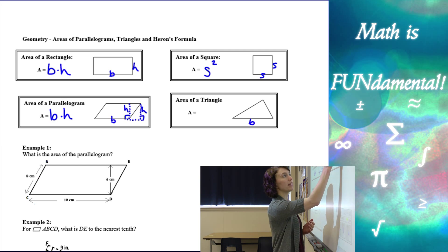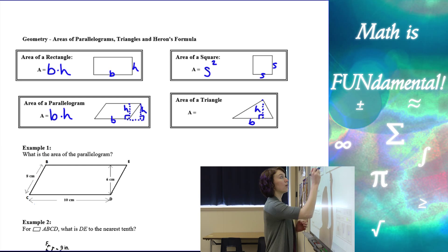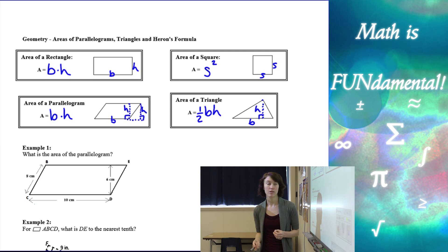And then area of a triangle, given the base, and then again, the height always has to be perpendicular to our base, we have one half base times height for the area of a triangle, or base times height divided by two.